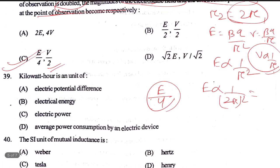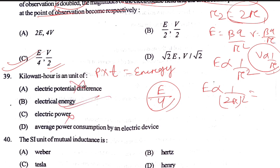Kilowatt-hour — kilowatt means power unit, hour means time unit. Power multiplied by time is energy. So kilowatt-hour is a unit of energy, specifically electrical energy. It represents the average power consumption by an electric device.